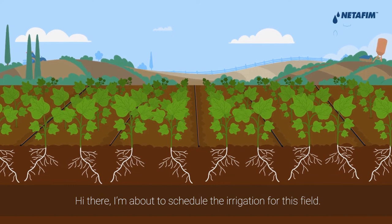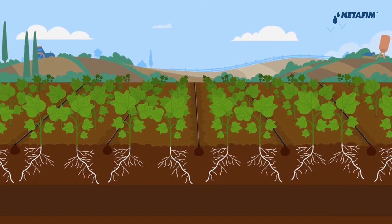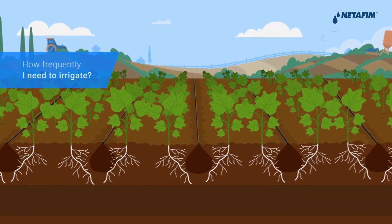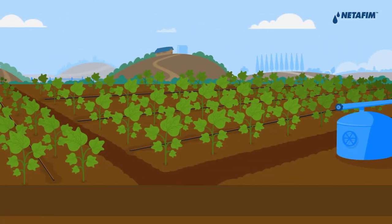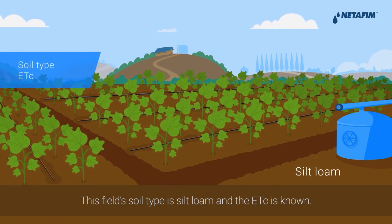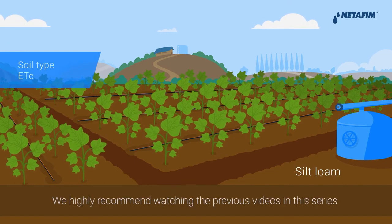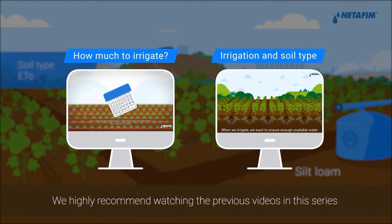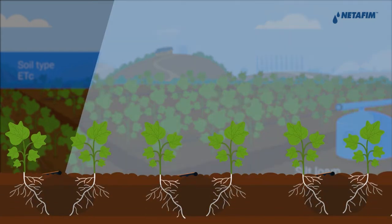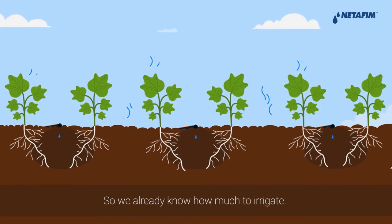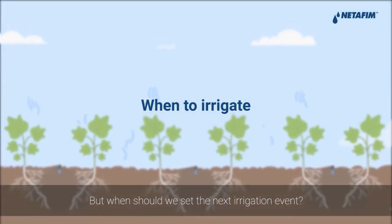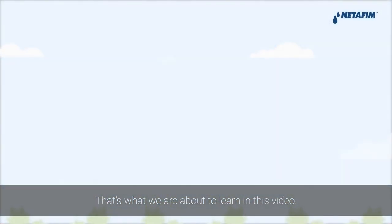Hi there! I'm about to schedule the irrigation for this field, which means I need to work out how frequently I need to irrigate. This field's soil type is silt loam and the ETC is known. We highly recommend watching the previous videos in this series to understand those parameters. So we already know how much to irrigate, but when should we set the next irrigation event? That's what we're about to learn in this video.